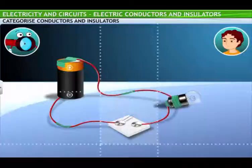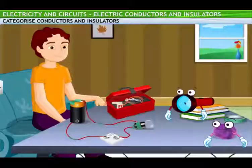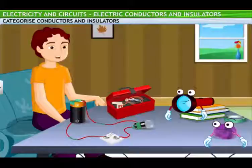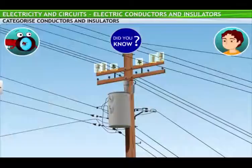Air belongs to the insulator club as well — it does not conduct electricity. Look, the bulb in the circuit did not glow until the switch was put in the on position by connecting the two pins. So, air is also an insulator. Did you know? Telegraph lines were the first electrical systems that used insulators.